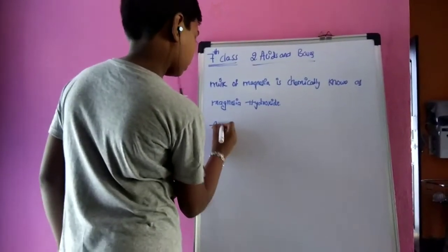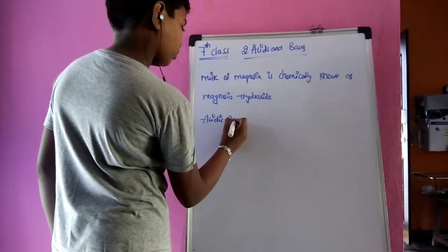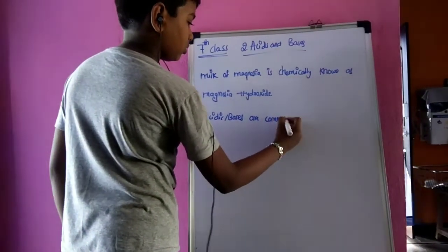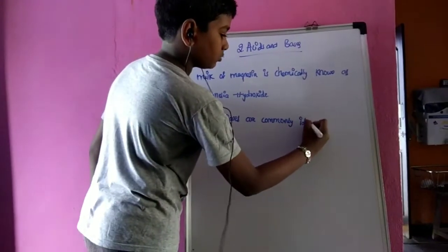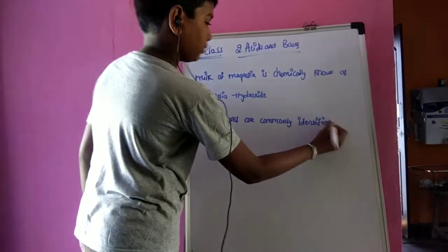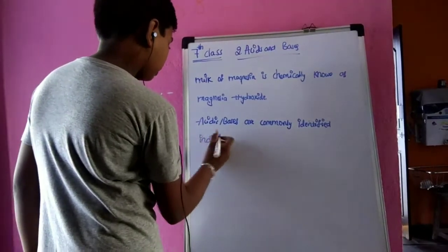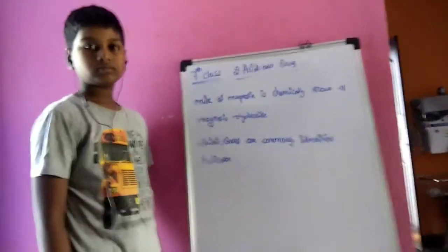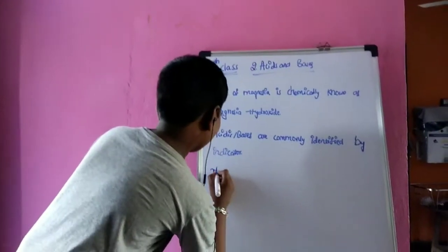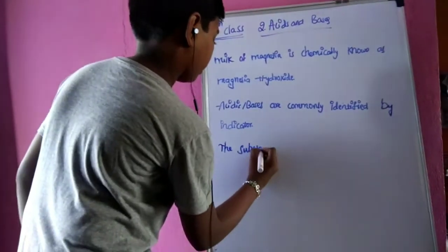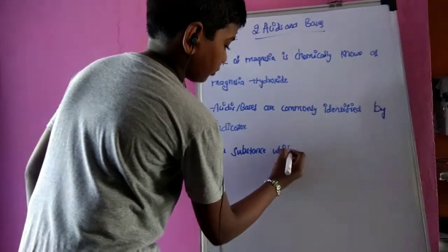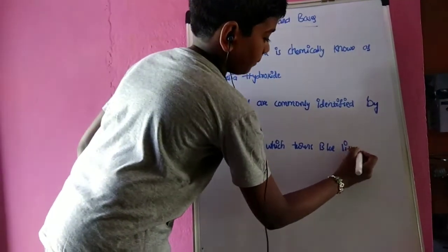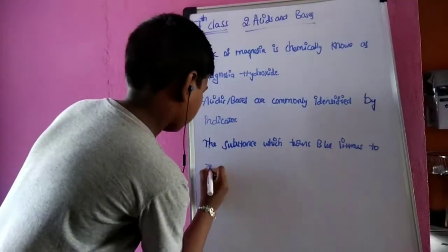Acids and bases are commonly identified by indicators. The substance which turns blue litmus to red color is known as acid.